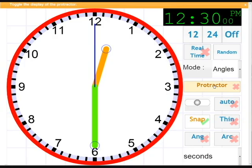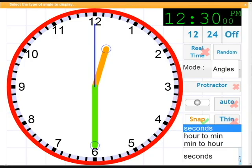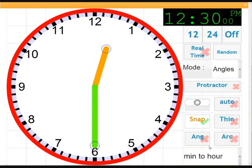So turning off the protractor we're now going to consider some of the angles we can actually measure on a clock. So we're going to select minutes to hour. So that's the angle measured clockwise from the minute to the hour hand. So we can show the angle and we can show the arc by clicking those two relevant buttons.